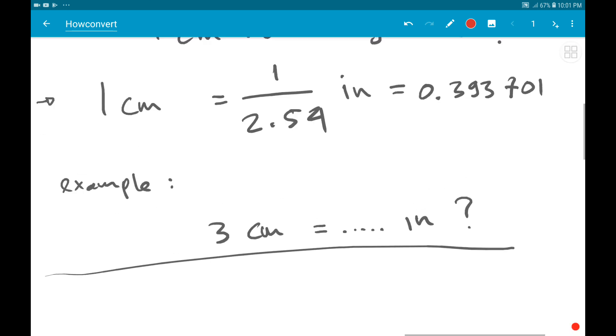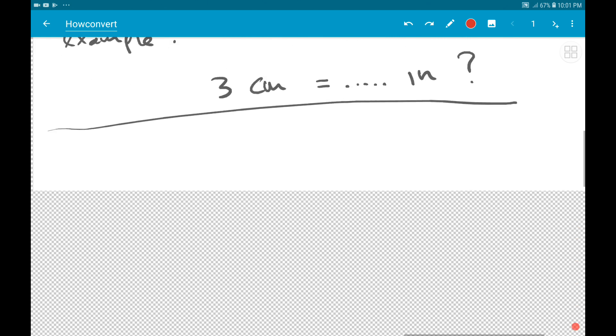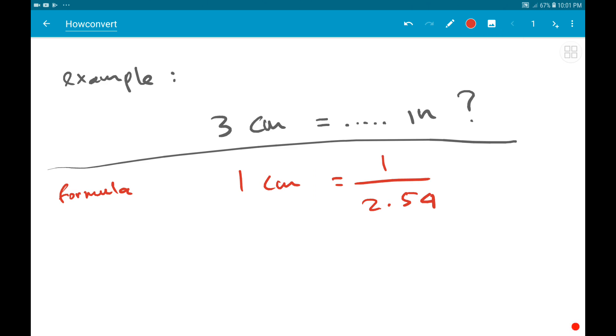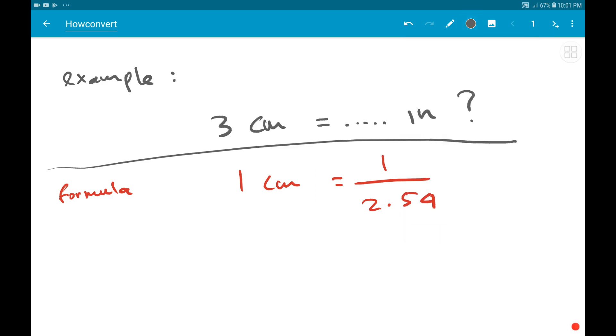Just like what we had before, this is the formula. So let's write it down here: Formula: 1 cm = 1/2.54 inches. That's the formula. And then we're going to write the solution.